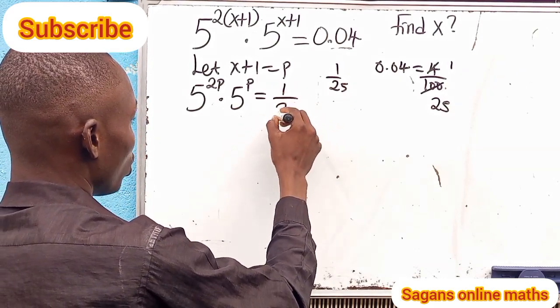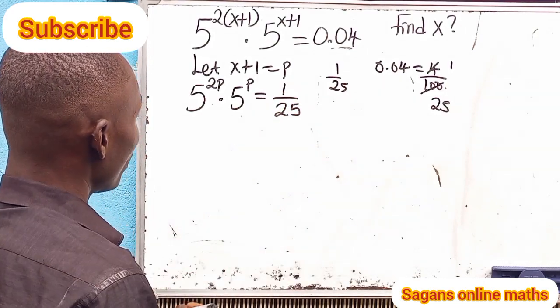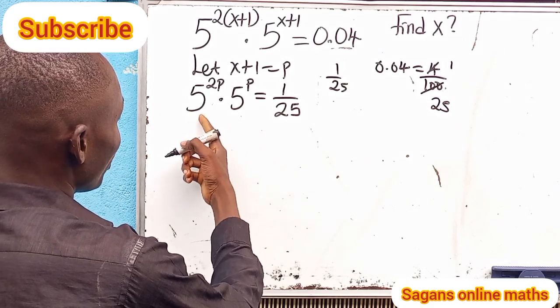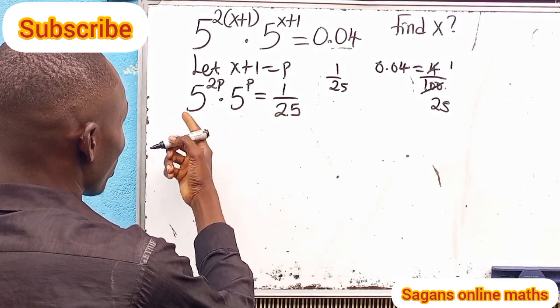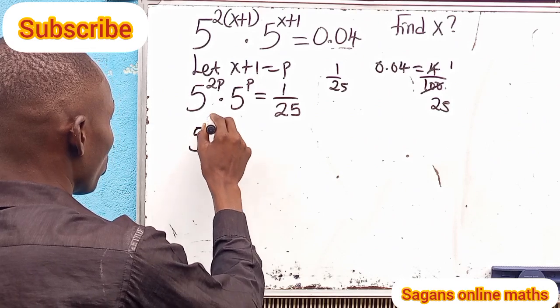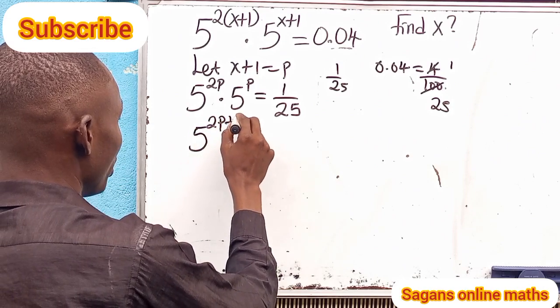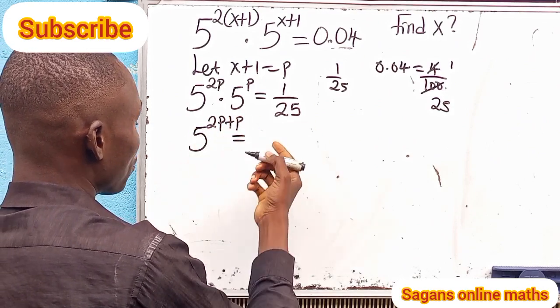So what we have here is 1 over 25. Let's obey one of the laws of indices: when the bases are the same and we're using multiplication, we add the indices. So we take a single base, 5 raised to -2p plus -p.